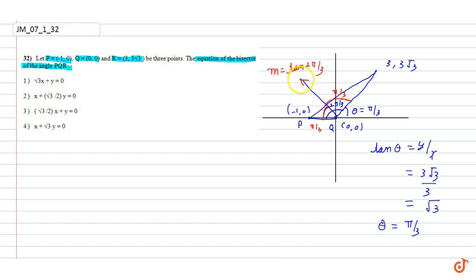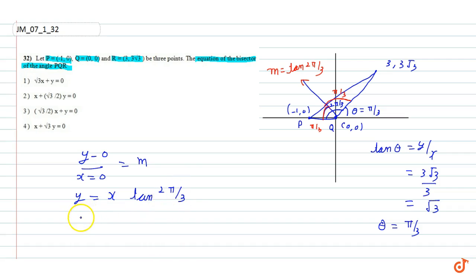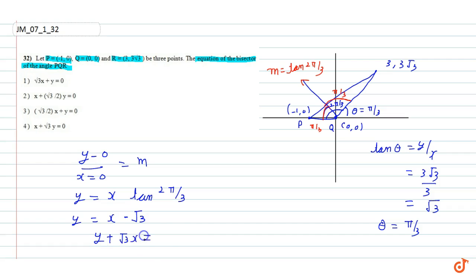The line passes through Q(0, 0), so the equation of the line is y/x = m. The slope m = tan(2π/3). Since cos(θ) is negative in that region, tan(2π/3) = -√3. Therefore, y = -√3·x, which gives the equation y + √3x = 0.